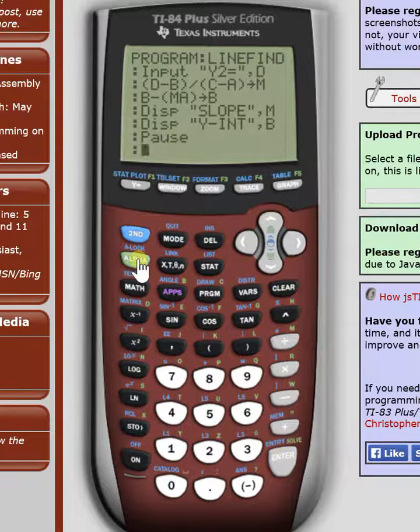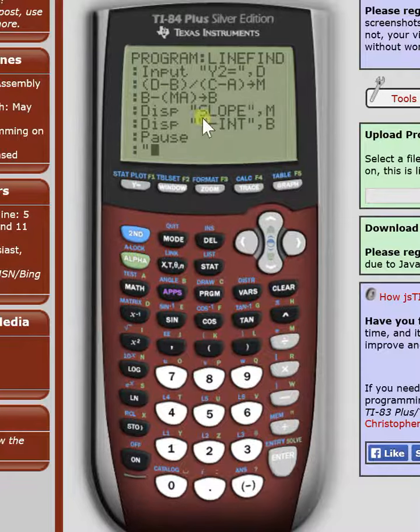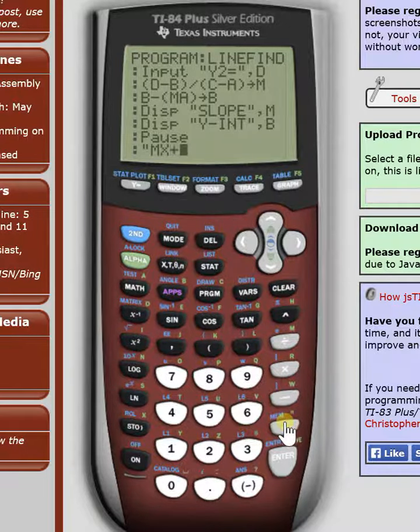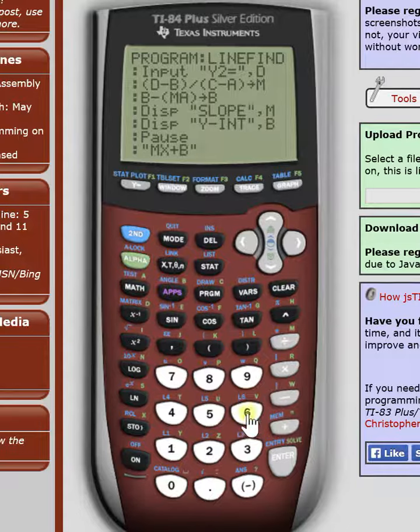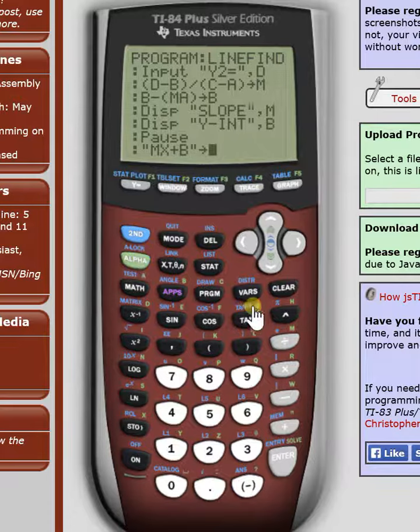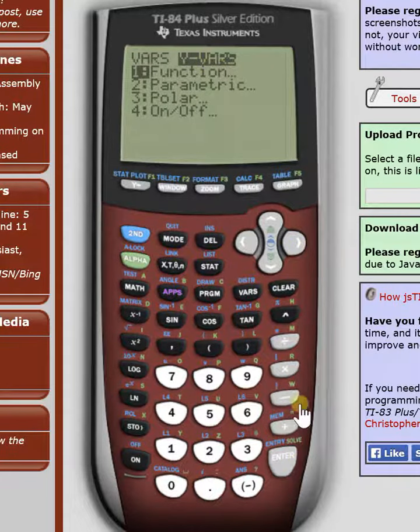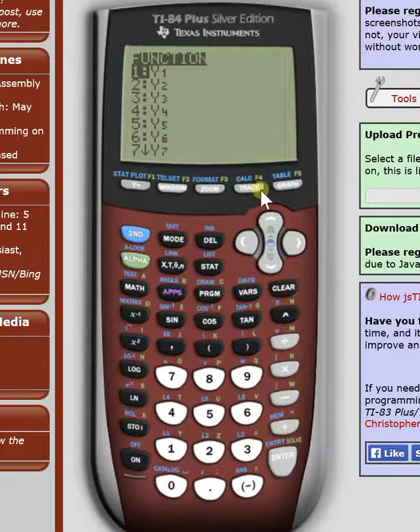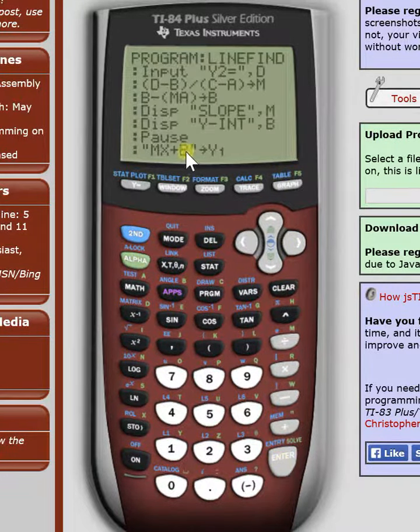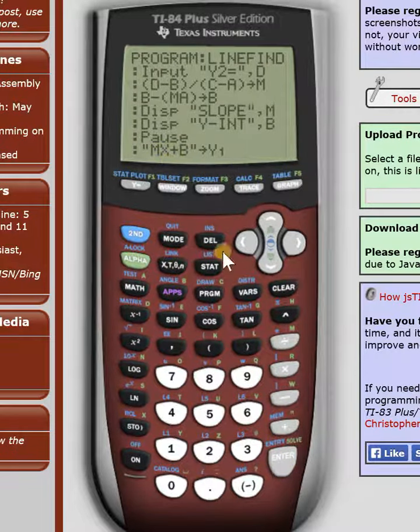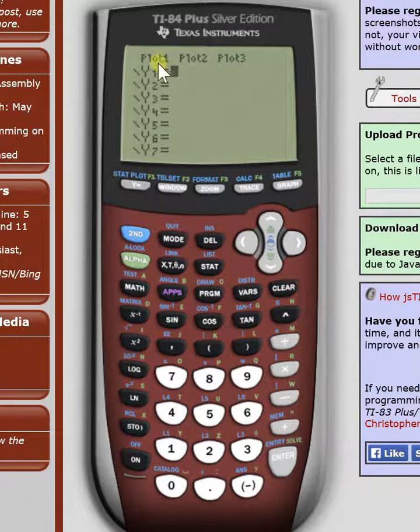And now we're going to do quotations. We're going to do m, x, plus, b. End quotations. And now we're going to store. We're going to hit the store button. We're going to go over to variables, this button right next to program. Go to yvars, your functions, and your y1.